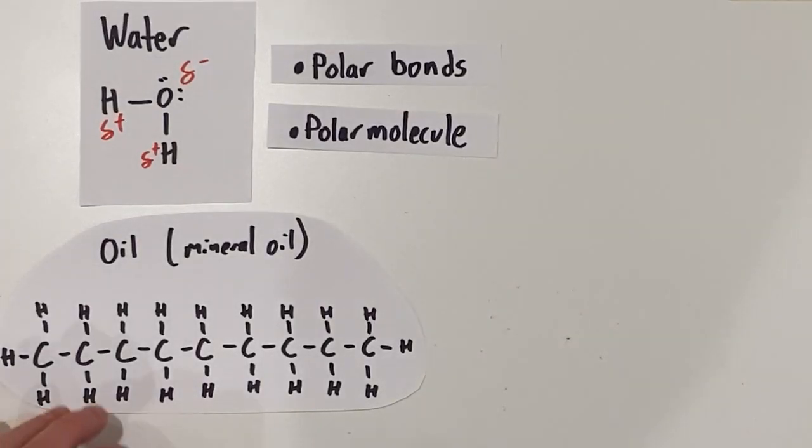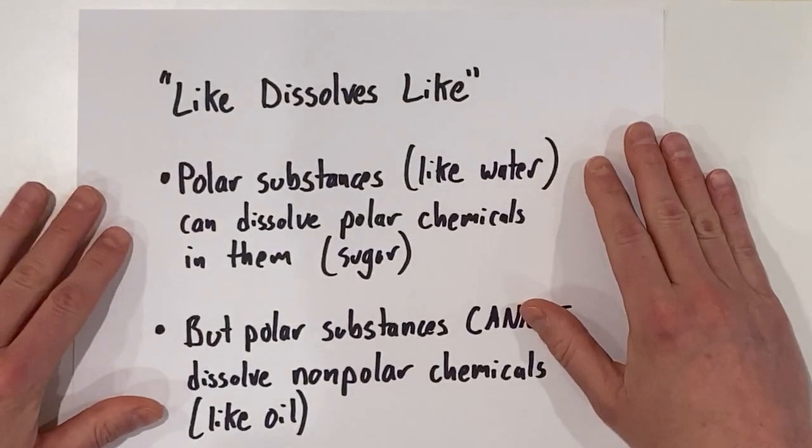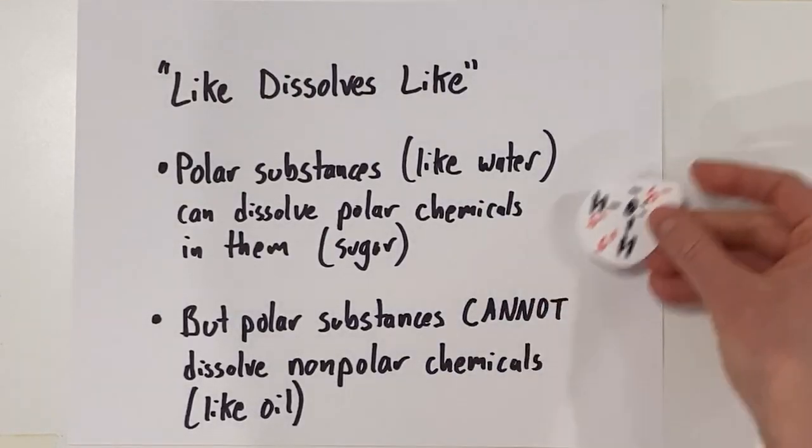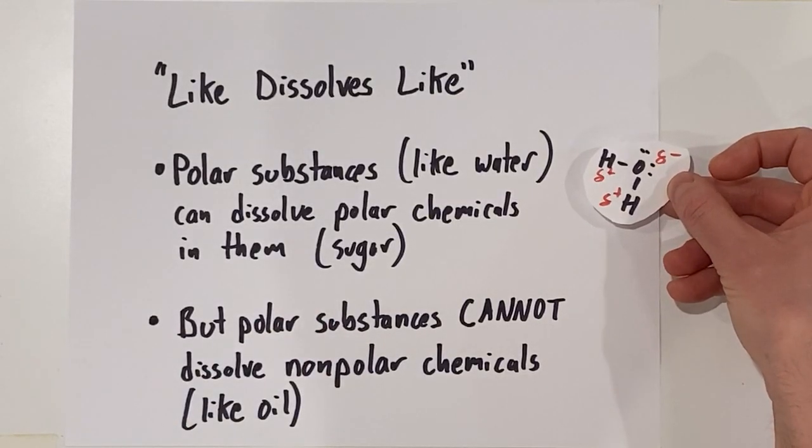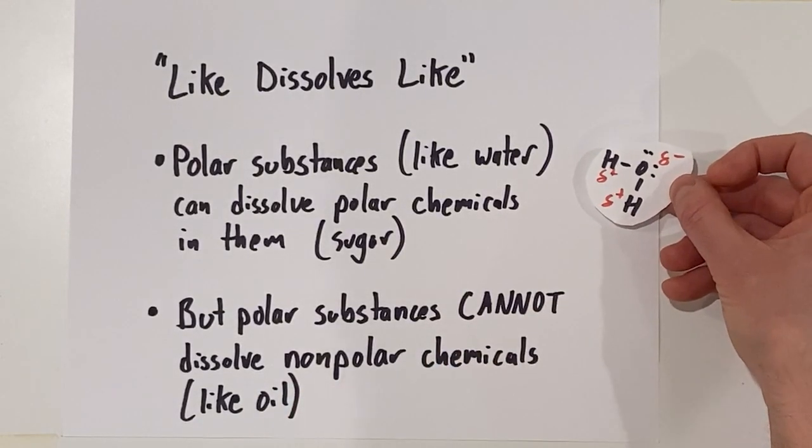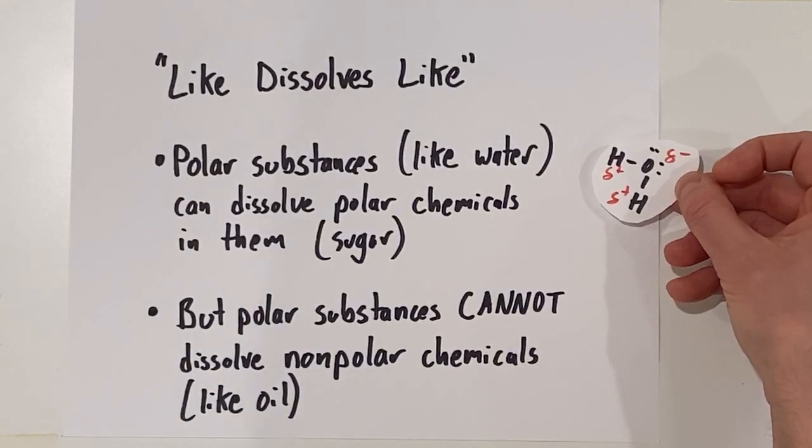We can summarize this in an important principle about what dissolves in what. And that principle is like dissolves like. So polar substances, like our water molecules, can dissolve polar chemicals in them, like sugar. But polar substances, like water, cannot dissolve non-polar chemicals, like oil. So if we want to dissolve something like oil, then we can't just use water. That's where soap comes in.